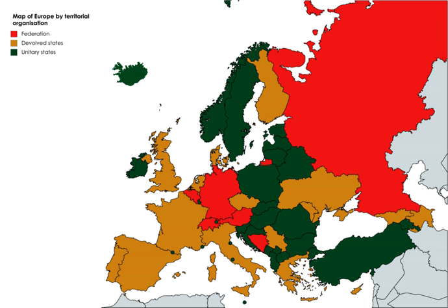Federalism in the Kingdom of Belgium is an evolving system. Belgian federalism is a twin system which reflects both the linguistic communities of the country — French (about 40% of the total population), Dutch (about 59%), and to a lesser extent German — and the geographically defined regions: Brussels' capital, Flanders, and Wallonia. In Brussels, approximately 80% of the population speaks French and 20% Dutch, with the city being an enclave of the Flemish region and officially a bilingual area.